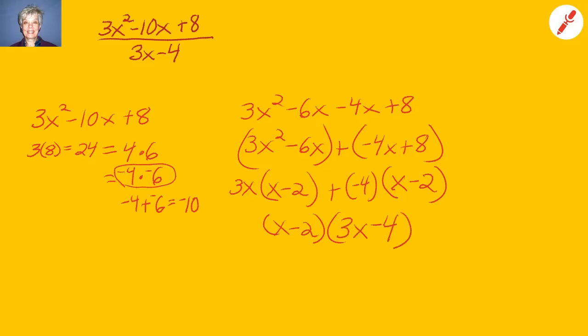Now I'll go back to the original fraction and I will rewrite it: x minus 2 times 3x minus 4 over 3x minus 4. The 3x minus 4s cancel, leaving me with x minus 2.